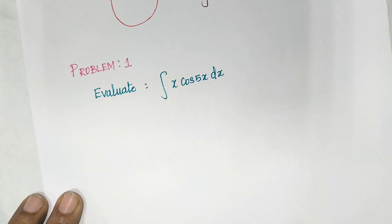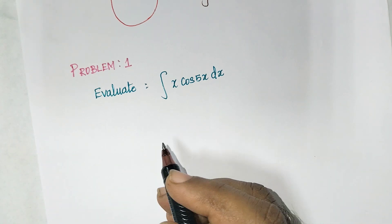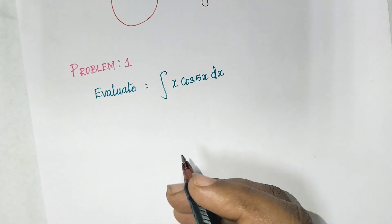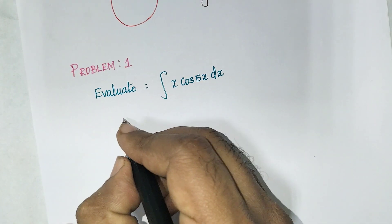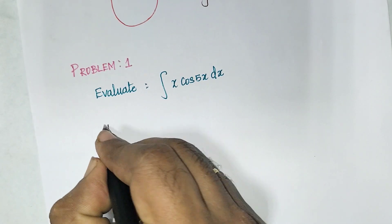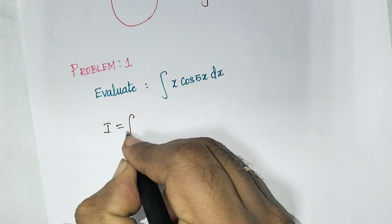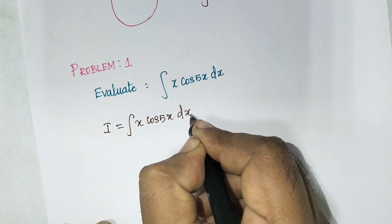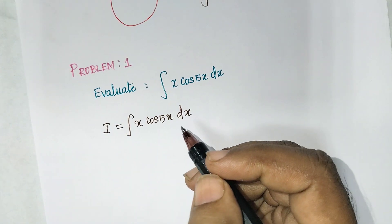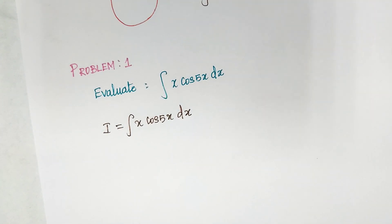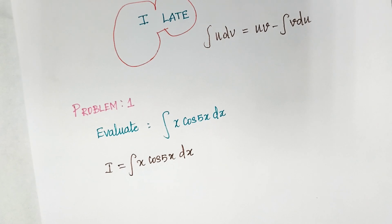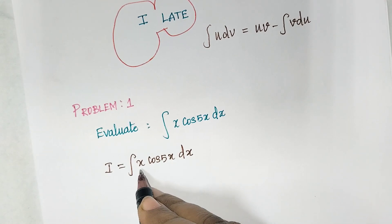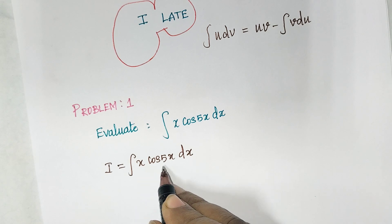For example, evaluate integral x·cos(5x)dx. I am going to apply integration by parts. Let I equal to integral of x·cos(5x)dx. Here we have two terms: x is algebra and cos(5x) is trigonometric. Which one do we take as u?